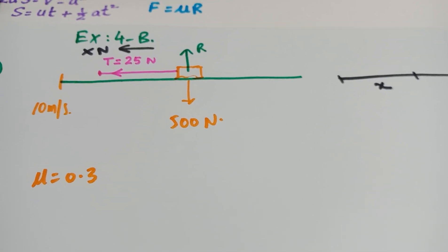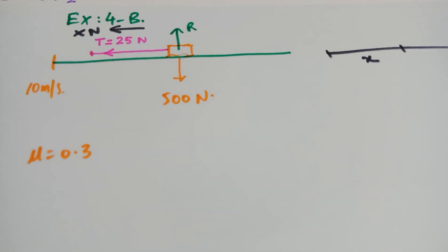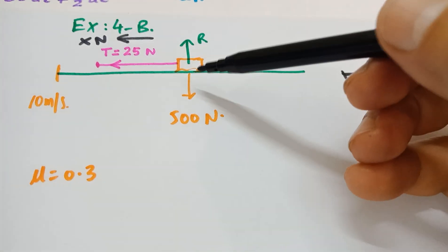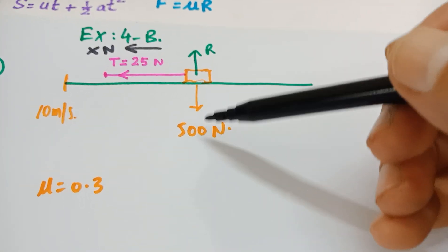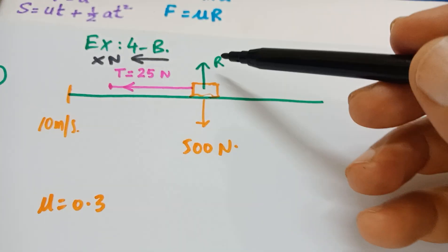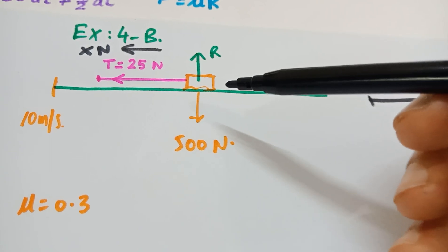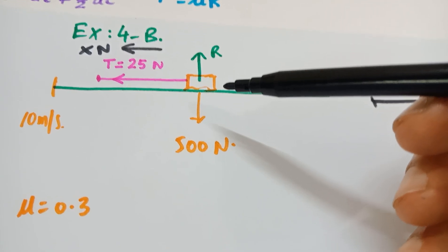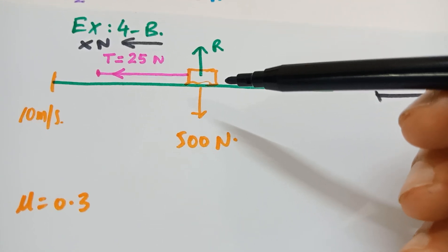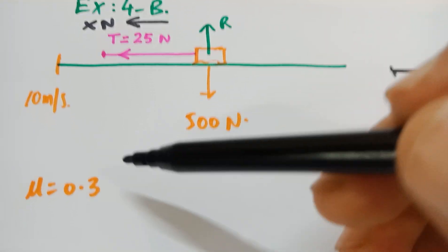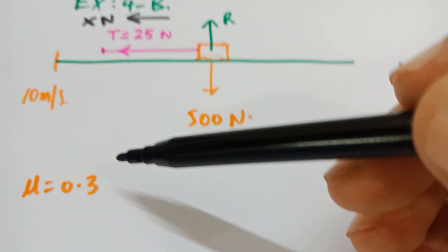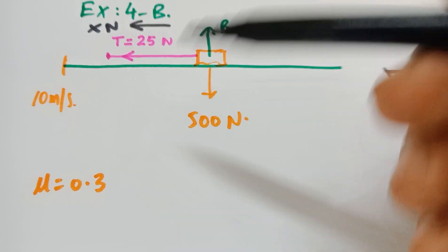Now the question says, a box of mass 50 kg, you see I have shown the mass is given as 50, so I have shown the weight as 500 N, and there is a r because this is moving on a rough horizontal ground, so we have to show this r. The coefficient friction between the box and the ground is 0.3,